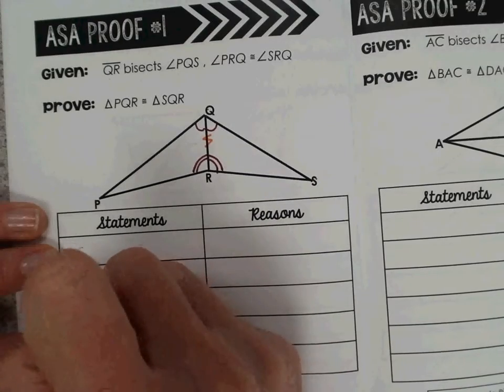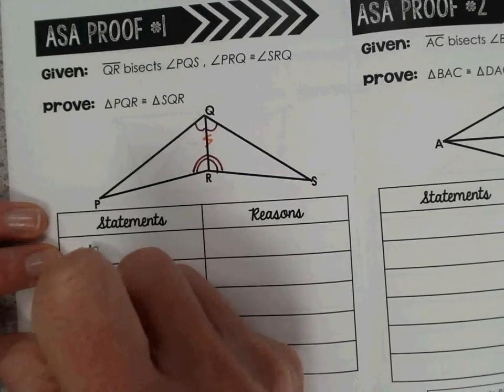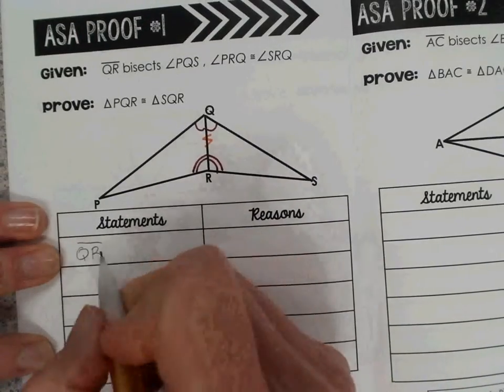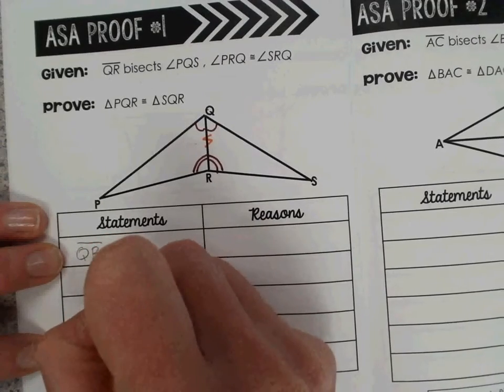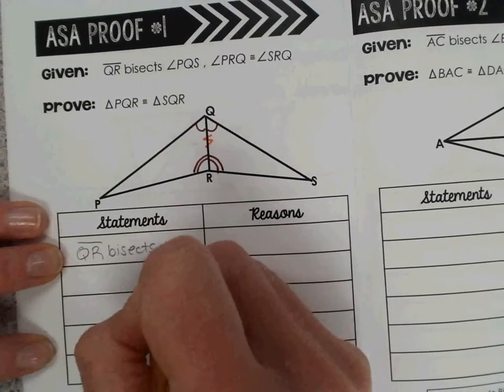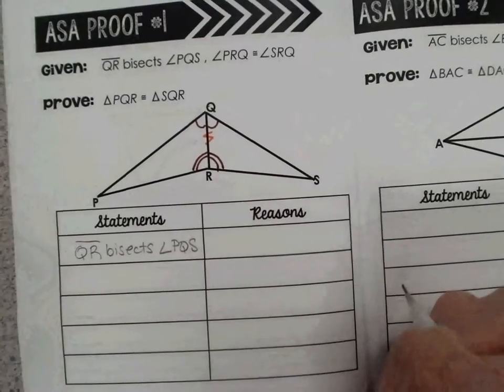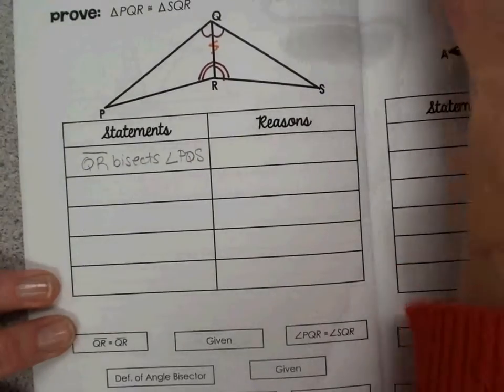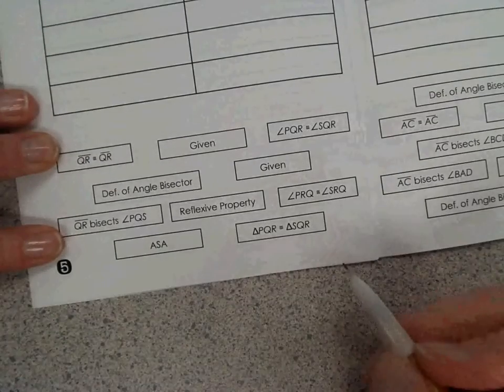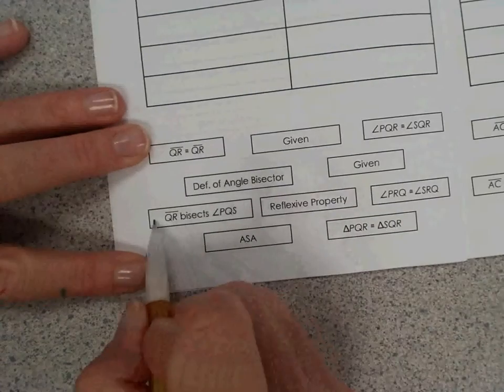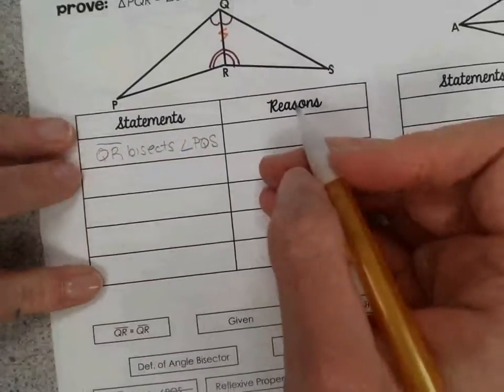Always start with given information. So segment QR bisects angle PQS. And we can cross that off, the reason being it's given.